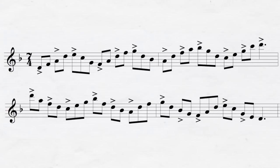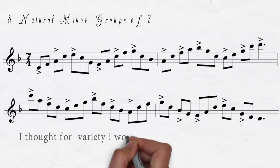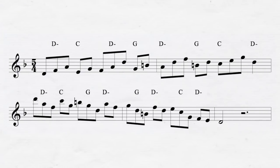The next example is on the natural minor, groups of seven this time. Now, groups of five on the Dorian.